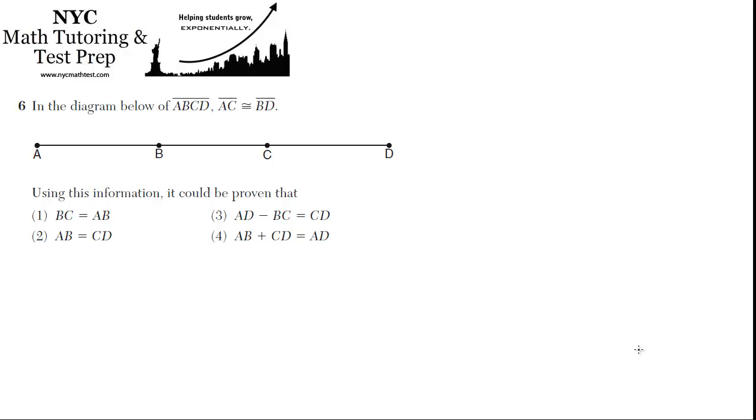Using this information, it could be proven that which of the following is true. So AC is congruent to BD. On this line segment, they're saying AC, which is this whole thing here, is congruent to BD, which is this whole thing here.